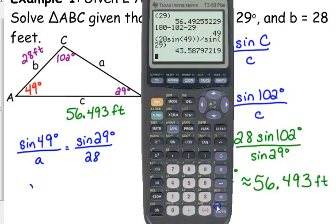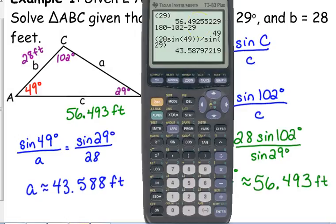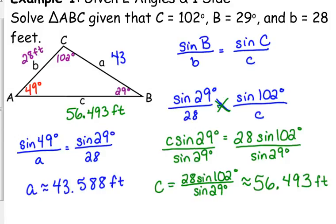That tells us that side a is approximately 43.588 feet. Now I would always, always do the check. Do you all remember the property about triangles and their sides and their angles? Well, all the angles have to add up to 180 degrees. But their sides can be ordered. The smallest side is opposite the smallest angle. So our smallest angle is angle B, 29 degrees. Our smallest side is 28. The biggest side corresponds to the biggest angle, 102 degrees. The biggest side was 56.493. So the middle angle and the middle side should be between those. So I would always do a check and make sure that those numbers do agree. And they do. And that's one way to check your answer.